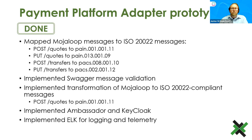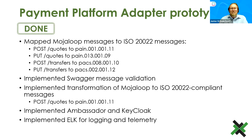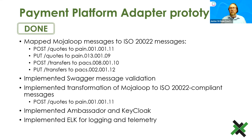We also implemented Ambassador and Keycloak to handle authentication, API endpoint exposure, and secure communications. Behind this, ELK — Elasticsearch, Logstash, and Kibana — was implemented for logging and telemetry. At the moment, because it's a prototype, this component is coupled into our existing infrastructure, but the intention is for it to be fully standalone. Once we move out of prototype stage, these components will be decoupled and deployed into the third-party API area inside Mojaloop to collect and route transactions to the TMS API.